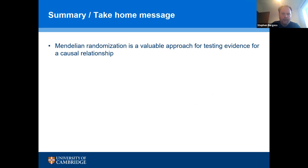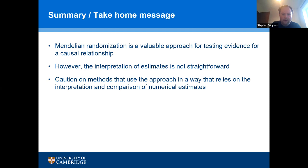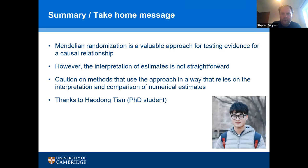In summary, Mendelian randomization is really valuable for testing evidence for a causal relationship. Even in straightforward examples, the interpretation of estimates is not straightforward, and I'd caution against applying this approach in a way that relies on interpretation and comparison of numerical estimates. A shout out to Haodong Tiang, my PhD student working on some of these problems — we don't think this is a complete loss, and there are some ways to interpret these estimates, but some care is needed.